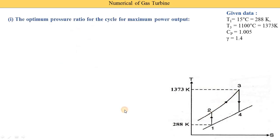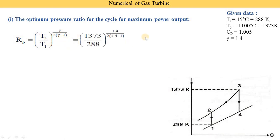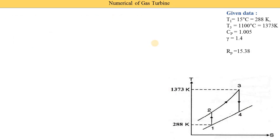Now we calculate the pressure ratio. The equation is RP = (T3/T1)^(gamma/(2(gamma−1))). Substituting T3 = 1373 K, T1 = 288 K, and gamma = 1.4 and computing, we get the pressure ratio RP = P2/P1 = 15.38. This compression ratio value is needed to find all other parameters.